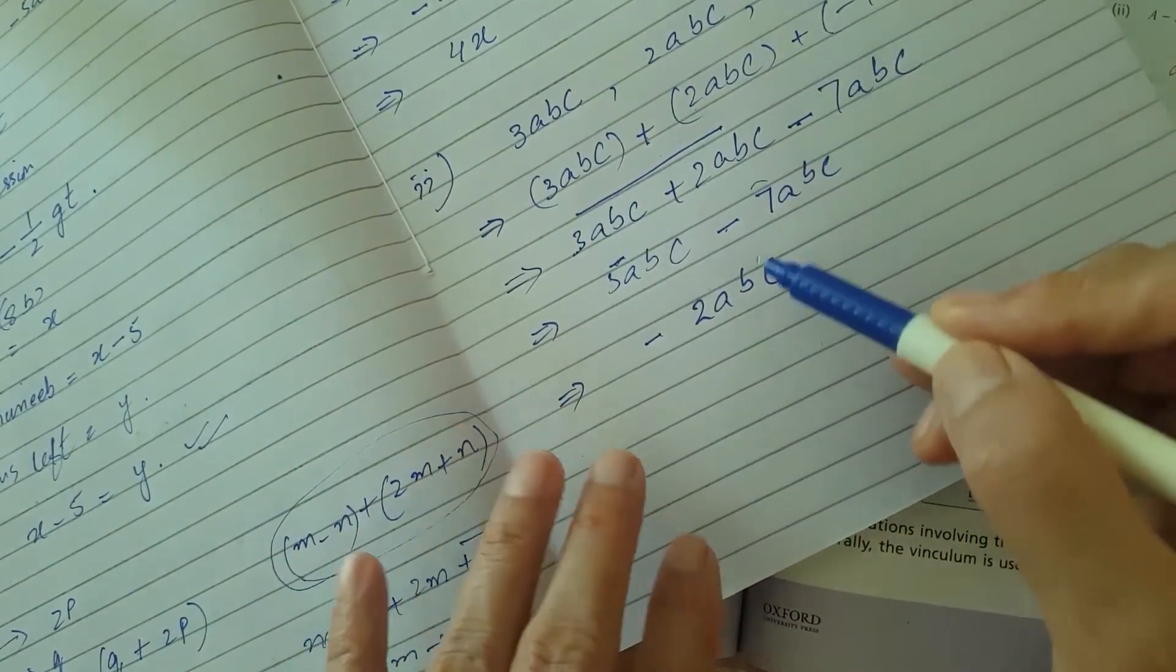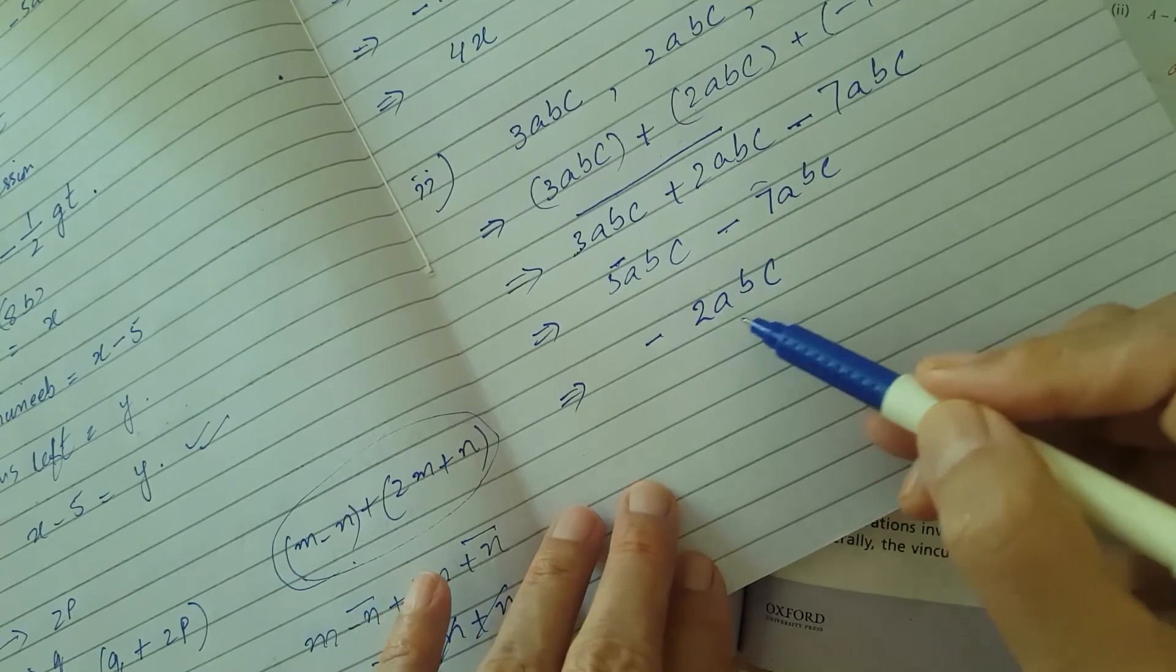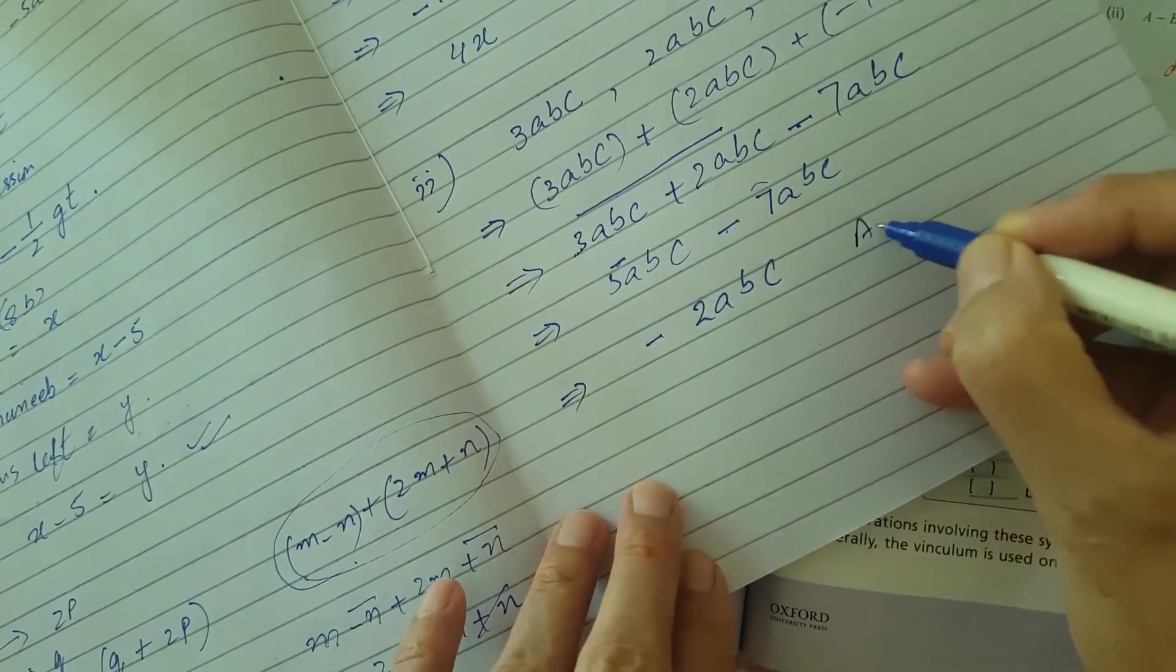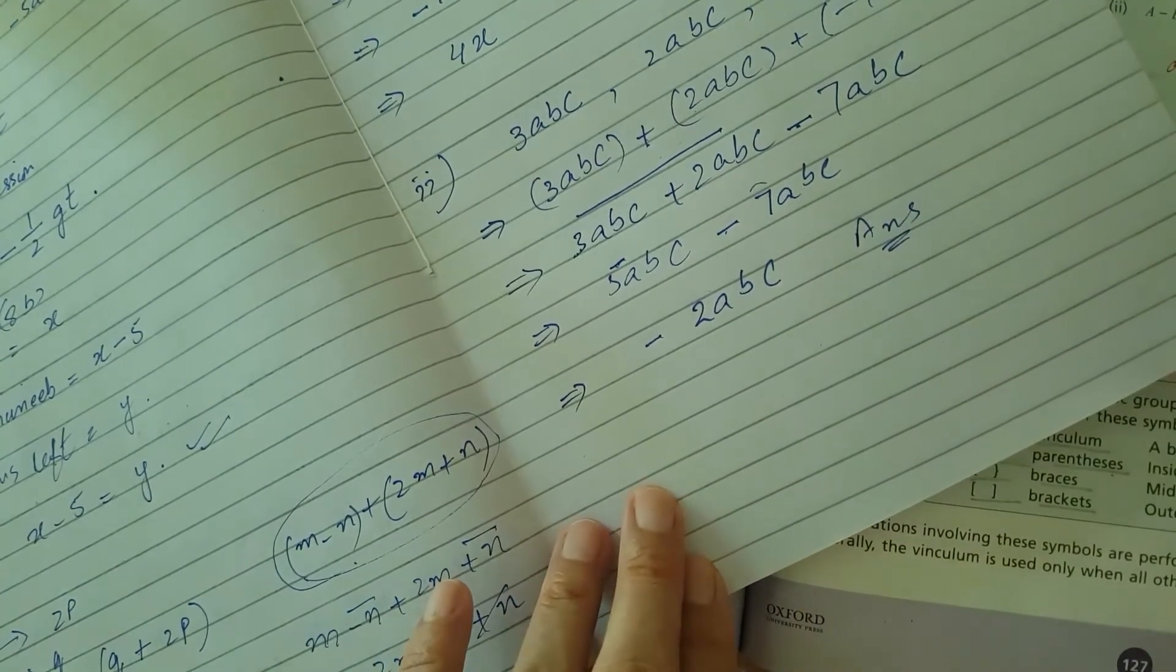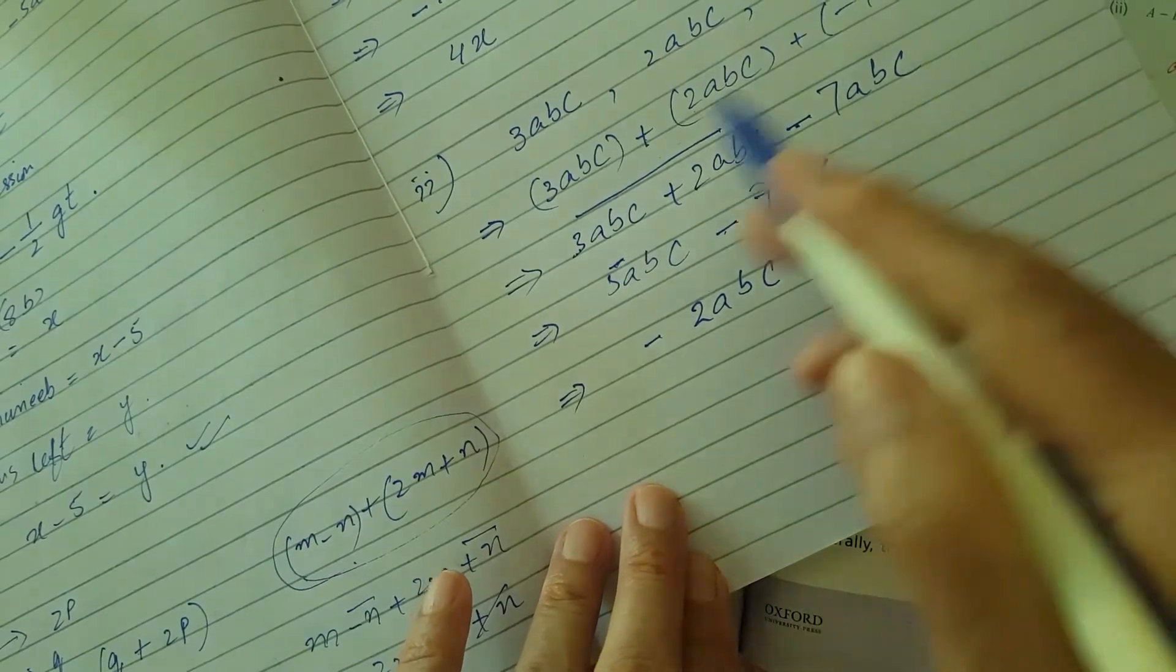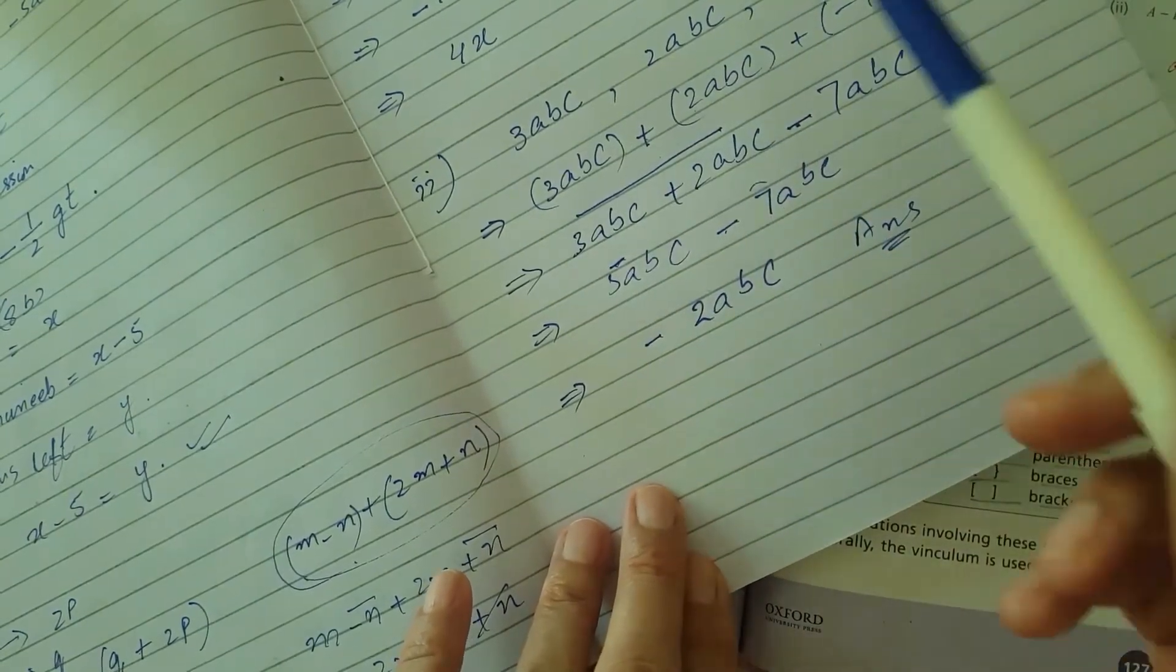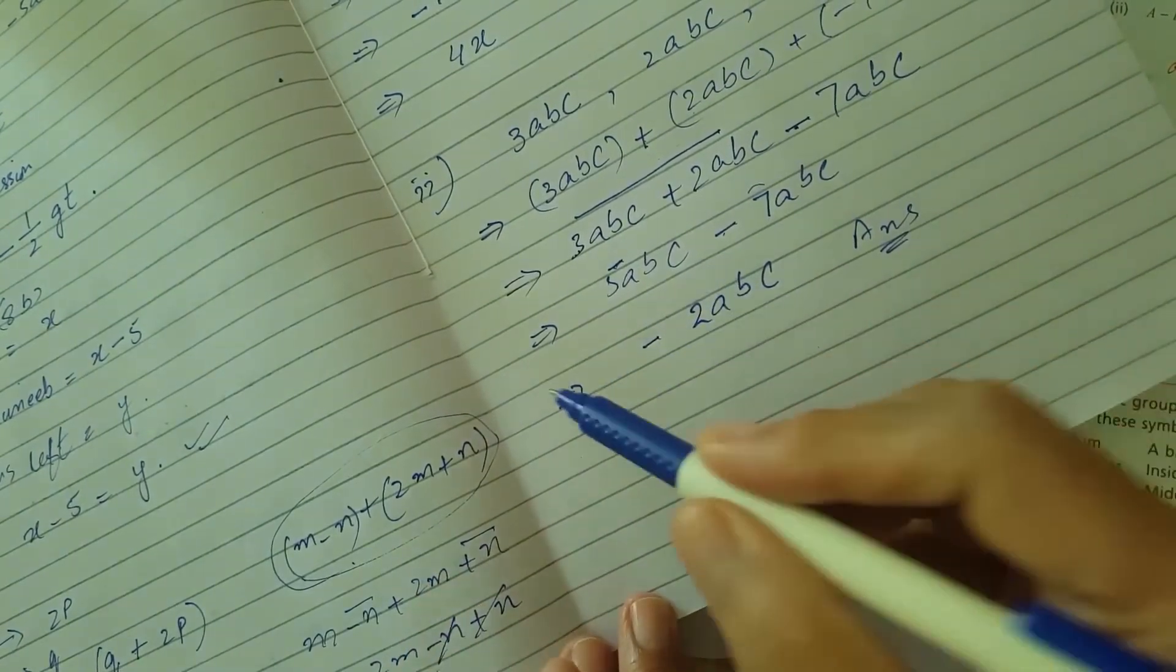And you get the answer minus 2ABC, which is the simplified answer to add up three of the expressions given in your question. This is the second part.